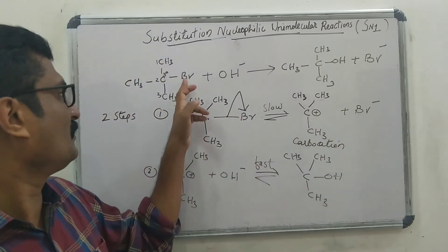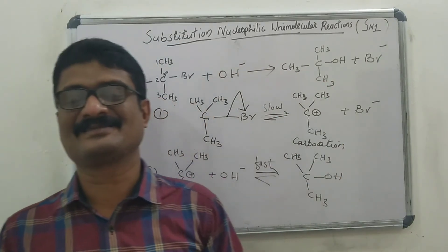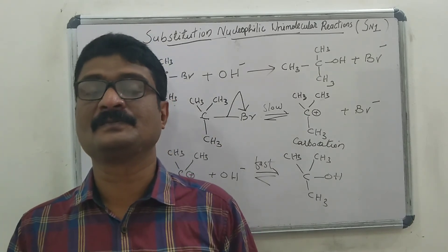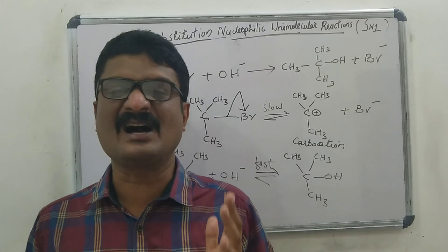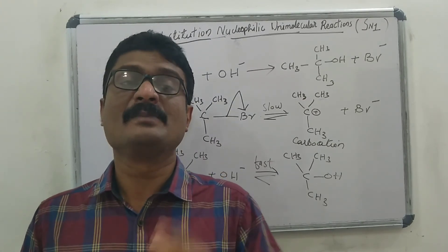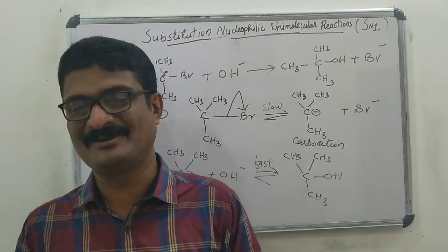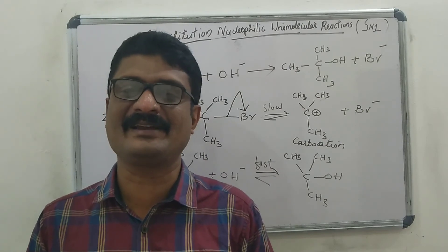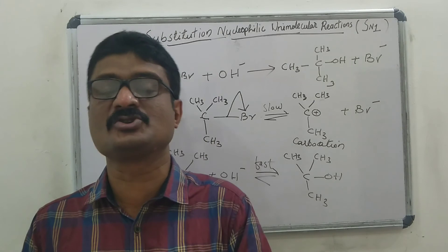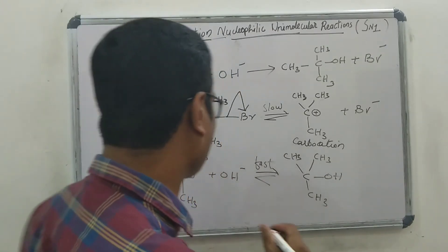The weaker nucleophile Br⁻ is replaced by the stronger nucleophile OH⁻. Tertiary alkyl halides undergo SN1 reaction very fast because of the high stability of the tertiary carbocation. This SN1 reaction is due to the greater stability of the tertiary carbocation.